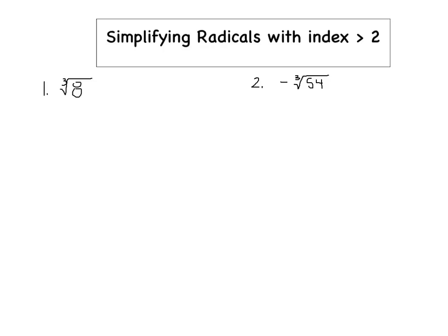So when we're talking about an index, we're talking about this number that's above the radical sign. And what I want you to realize is that when there's no number there, then that is a square root. But when there is an index there, then it'll tell you what kind of radical it is.